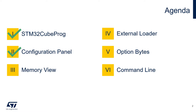In the earlier videos of this series we saw an introduction to the STM32 Cube Programmer and learned how to navigate through the configuration panel and the memory view. Now we will see how we can work with external memory using an external loader, and how to read and program the option bytes.